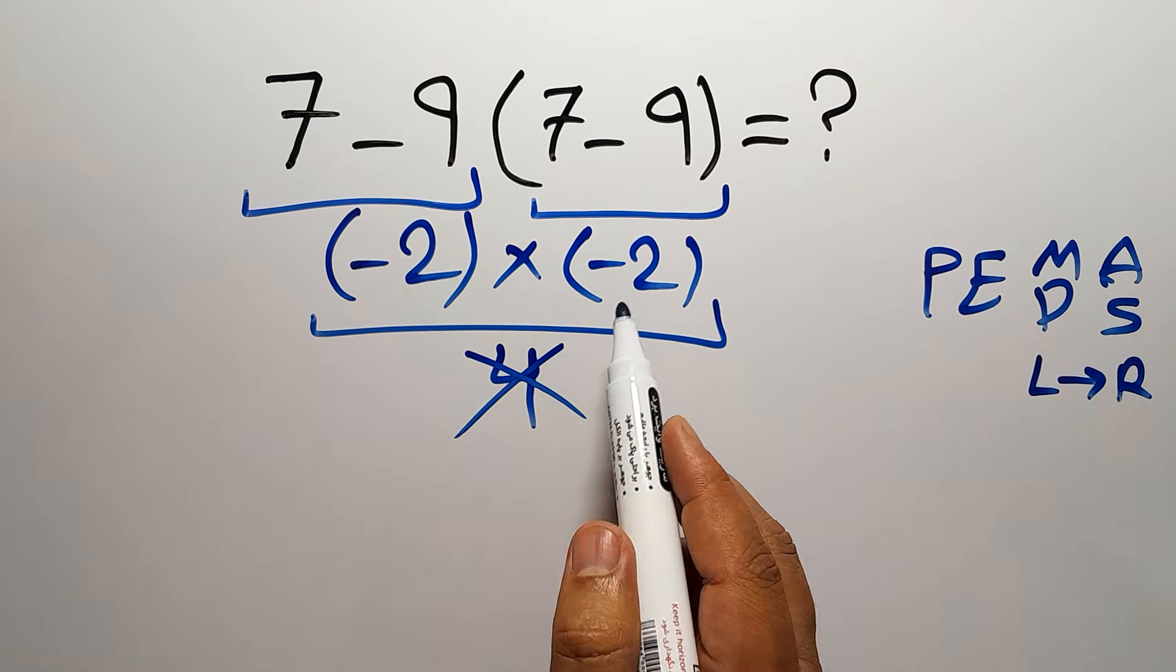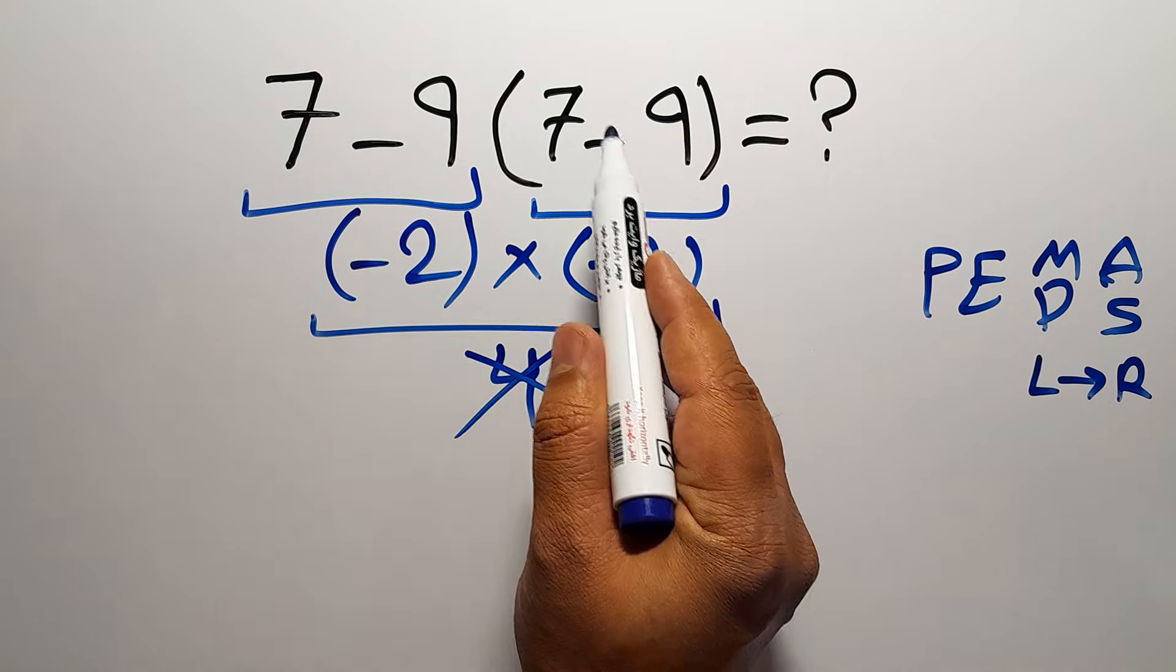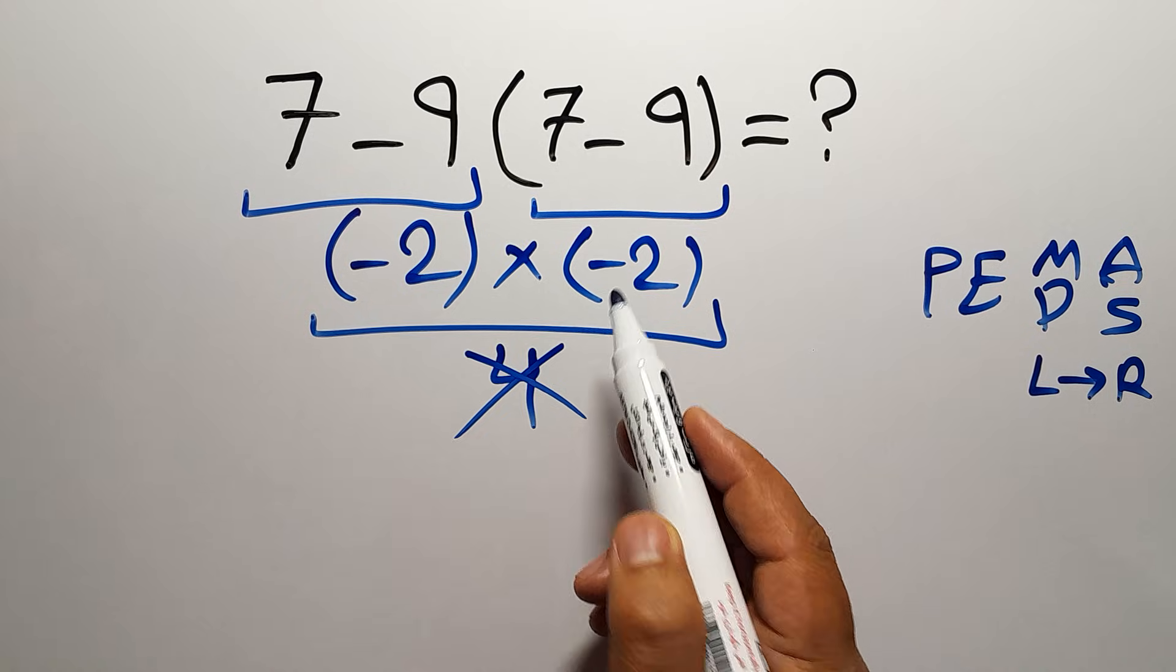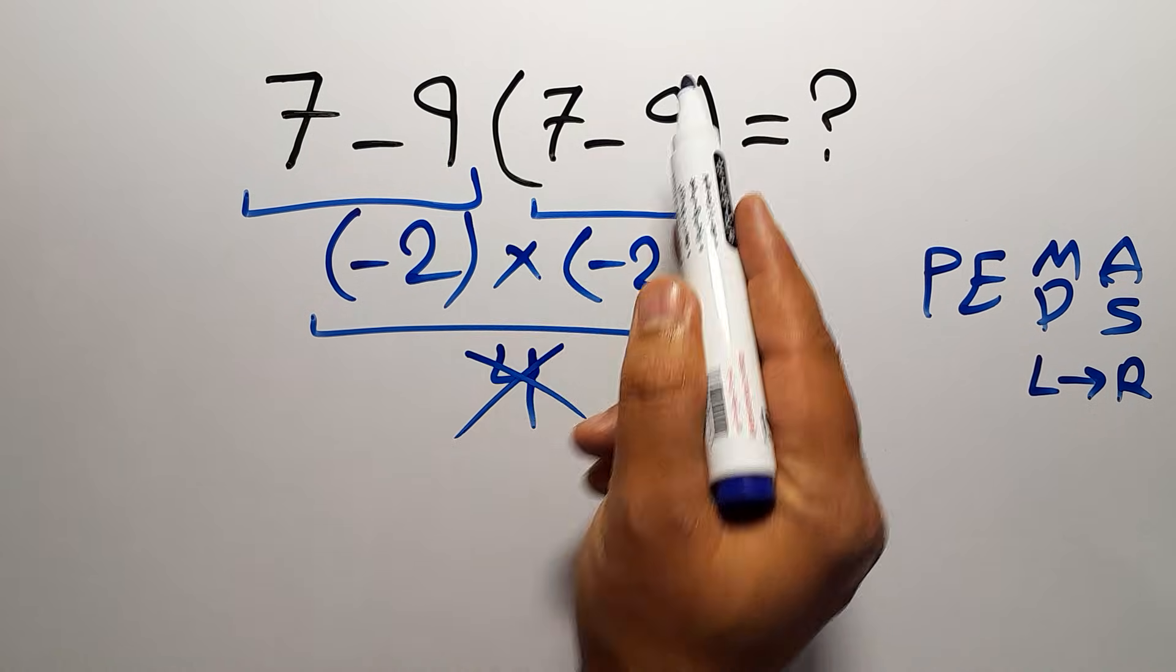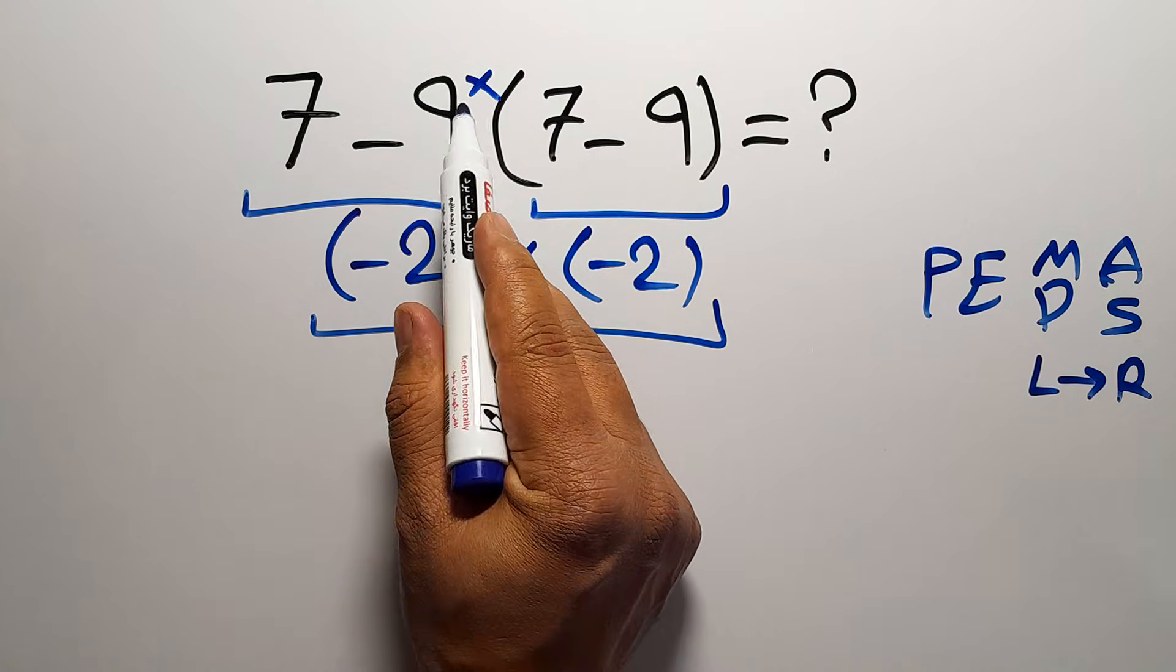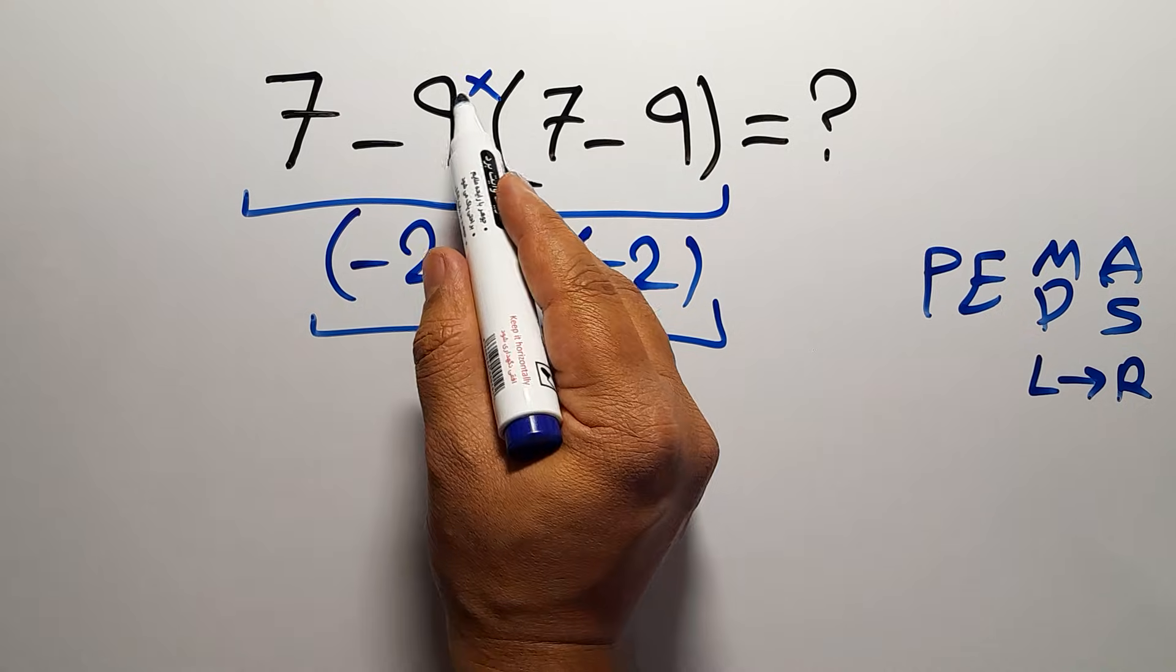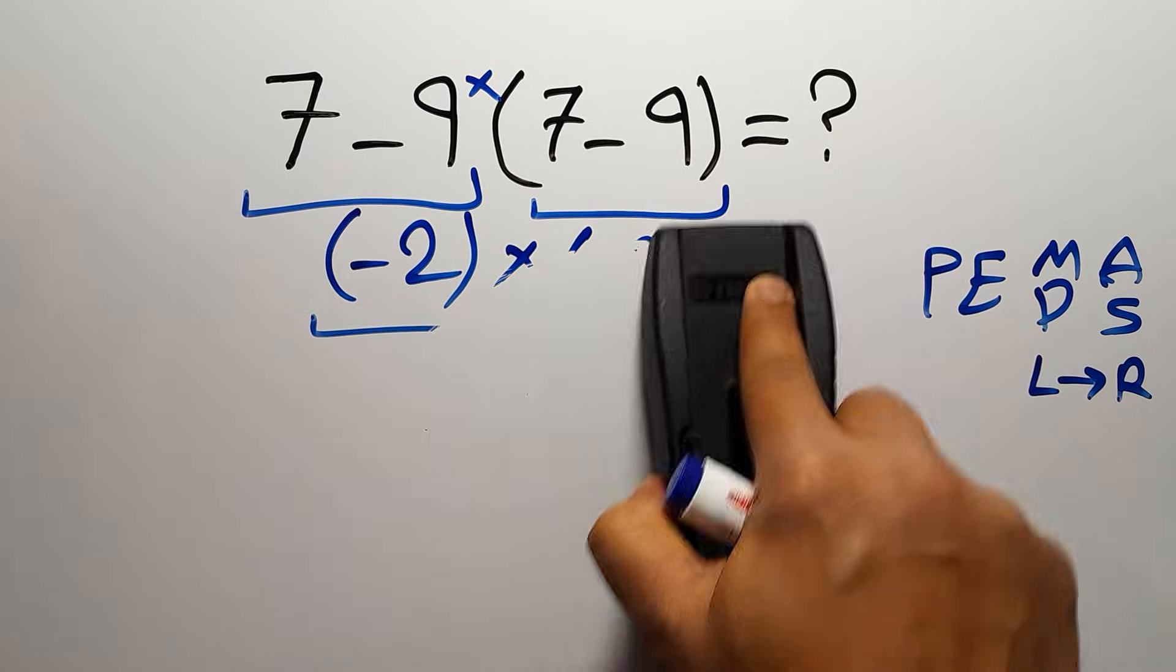Here in this expression we have one subtraction, one multiplication and these parentheses. In mathematics, when a number is placed next to parentheses, it means multiplication and we usually don't write the multiplication sign for brevity.